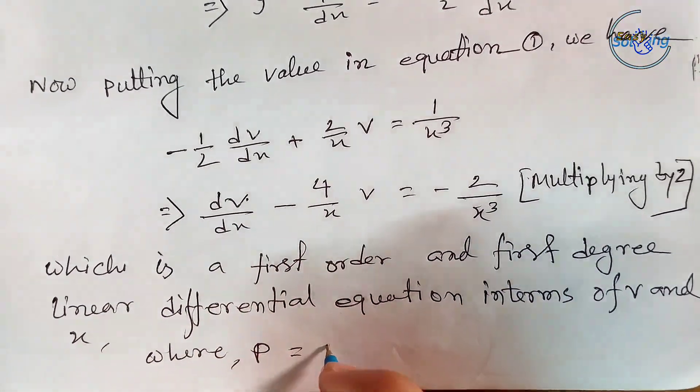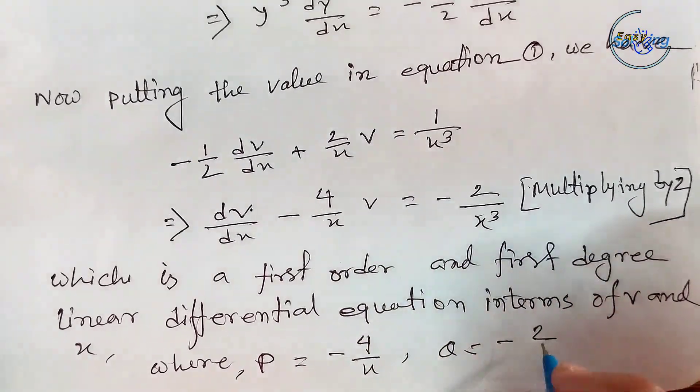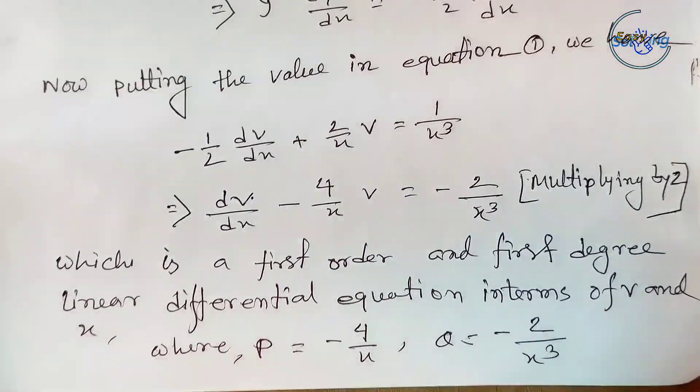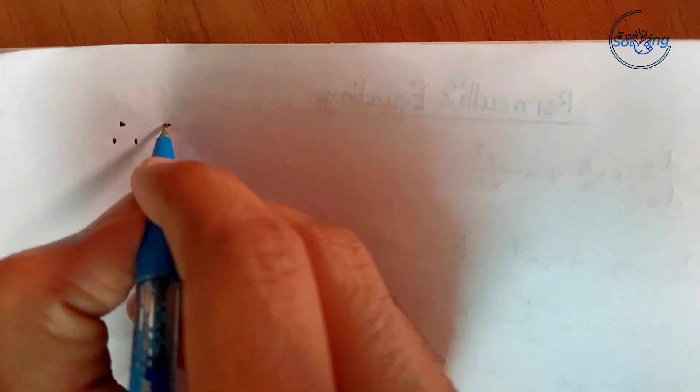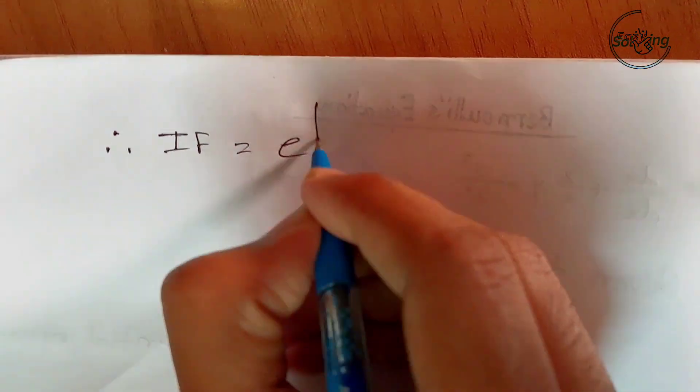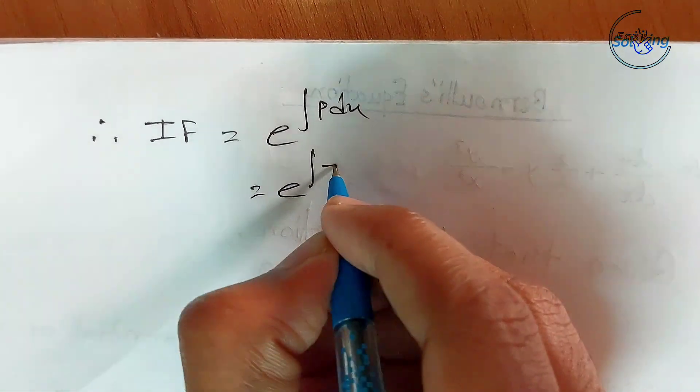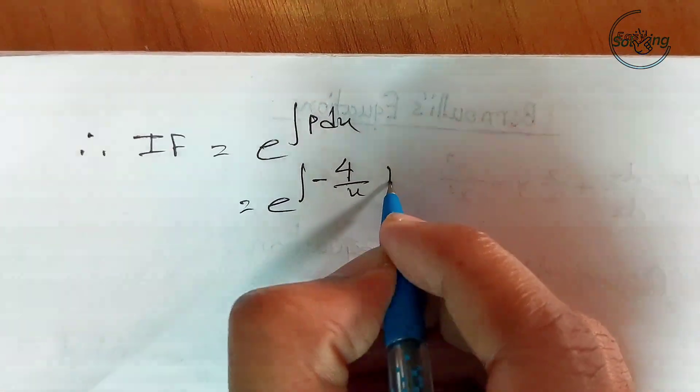Where P is equal to -4/x and Q is equal to -2/x³. The integrating factor IF is e^(∫P dx), where P = -4/x.